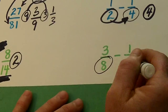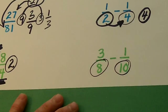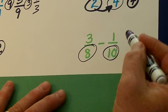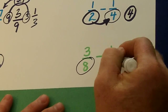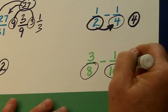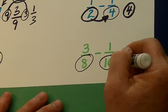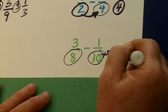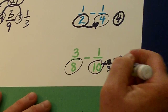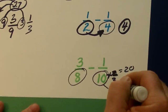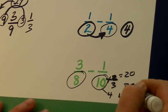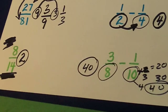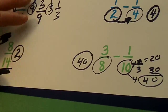8 and 10. Can 8 go into 10? No. So we multiply 10 times 2. Can 8 go into 20? No. Multiply by 3 — can 8 go into 30? No. Multiply by 4 — can 8 go into 40? Yes. 40 is the lowest common denominator.